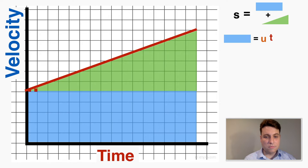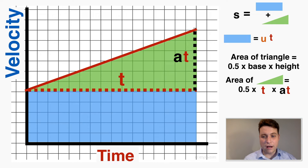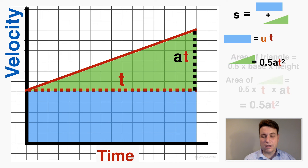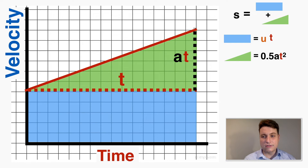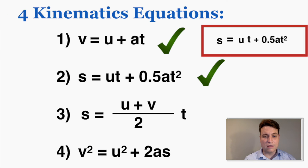For the triangle, the base is time t and from the previous proof the height is equal to acceleration times time, or at. The area of a triangle is one-half base times height, so the area equals one-half times t times at, which simplifies to one-half times a times t squared. Adding the rectangle and triangle areas together, the total displacement equals ut plus one-half at squared, which is the second kinematics equation.